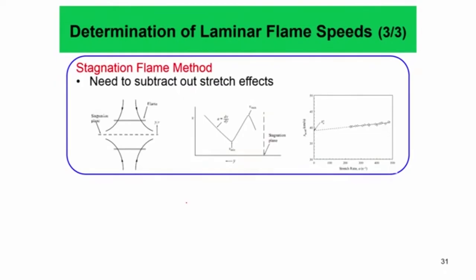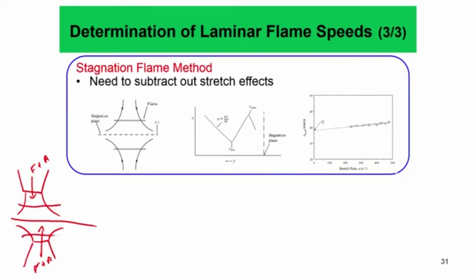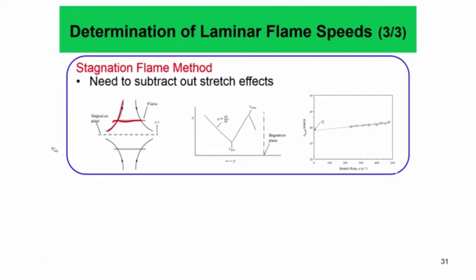Another method is the stagnation flame method, though the flame is stretched here as well. In the stagnation flame method, you have two jets of fuel-air mixture impinging on each other; they impinge on a stagnation plane and a flame is formed slightly upstream and downstream ahead of the stagnation plane. Because of the diverging jet, the flame is stretched, and we have to subtract the flame stretch to get the planar laminar flame speed. The planar laminar flame speed is the parameter of choice because it involves both transport and reactions, making it a very good choice for validating detailed reaction mechanisms.